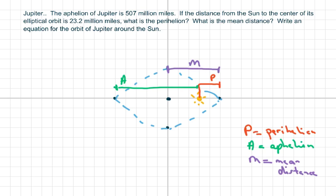The mean distance is from the origin to the outer portion of the ellipse. This would be your major axis when we're talking about ellipses. We have to find the mean distance and the perihelion, and we're given the distance from the Sun to the center, which is 23.2 million miles.